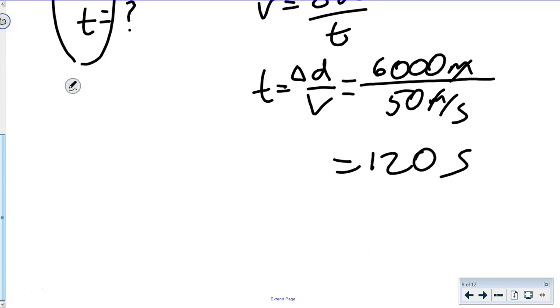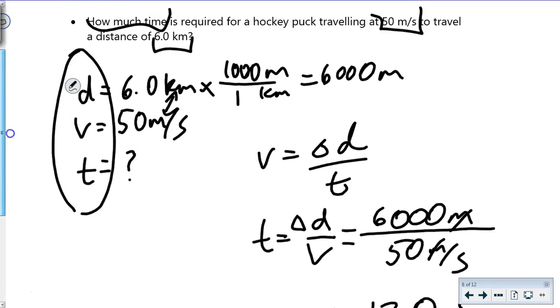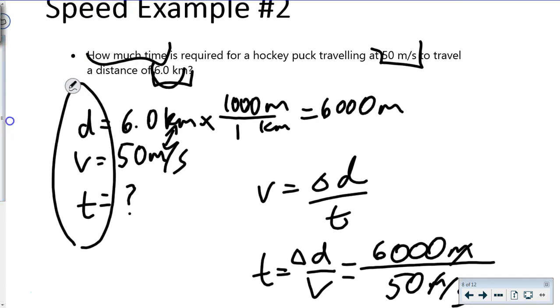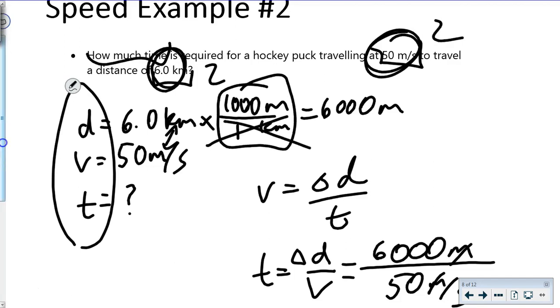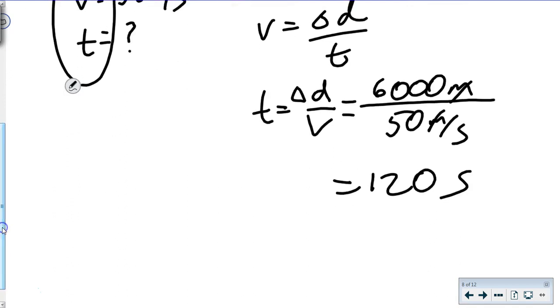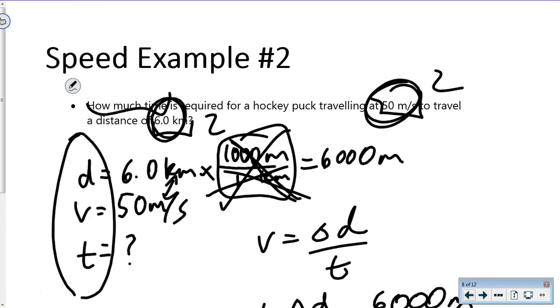I'll pop back up to check significant digits: two in our given values. The unit conversion doesn't matter—those are exact values. We have two significant digits, so our answer is 1.2 times 10 squared seconds.